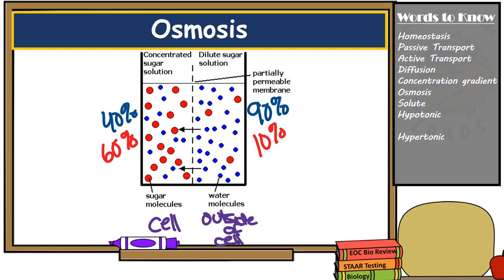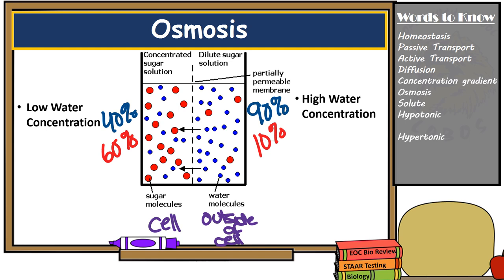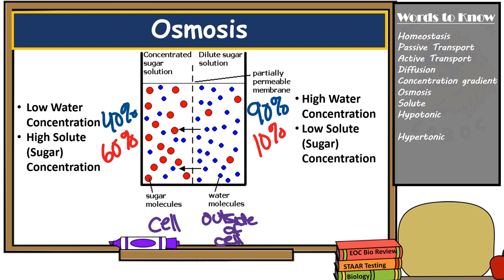Based on our estimated percentages, the solution on the left has a lower water concentration of about 40%, while the solution on the right has a higher water concentration of about 90%. The solute concentration is the opposite: higher on the left and lower on the right. Since osmosis is the movement of water from high to low concentration, water in this example would move into the cell until equilibrium of water concentration is reached. It's important to understand that osmosis is only the movement of water — the solutes do not move.